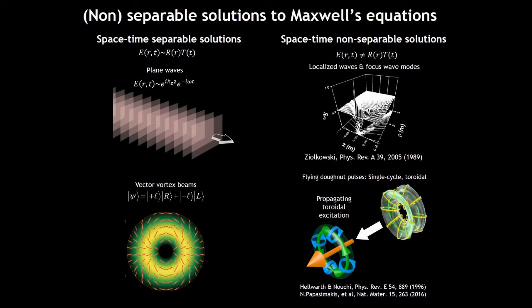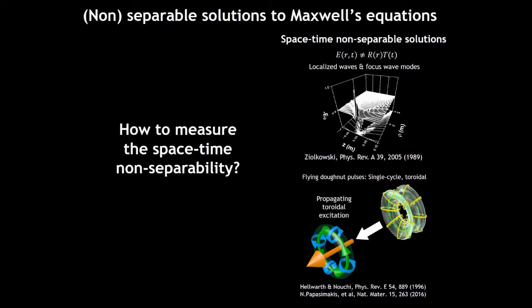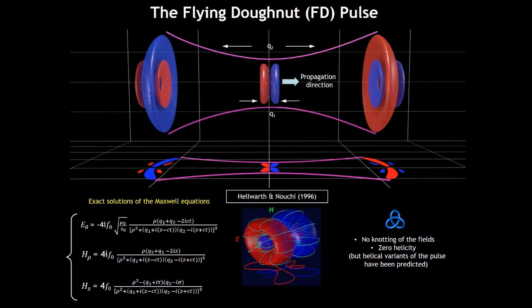And another one is a very interesting flying doughnut pulse. The flying doughnut is a single-cycle toroidal topology as a propagation ANAPO excitation. How to measure the space-time non-separability is what my work is focusing.